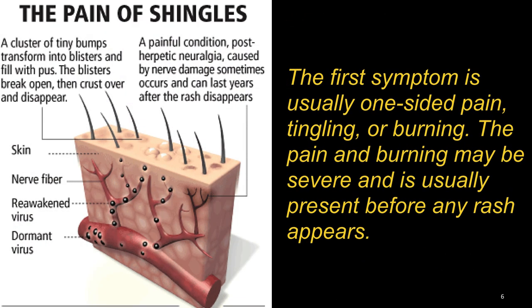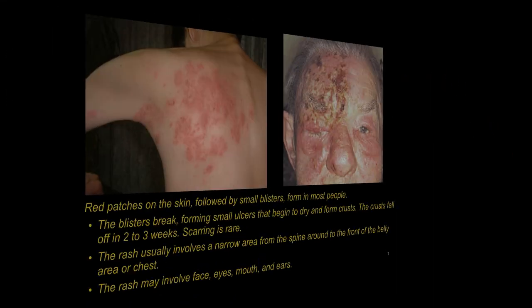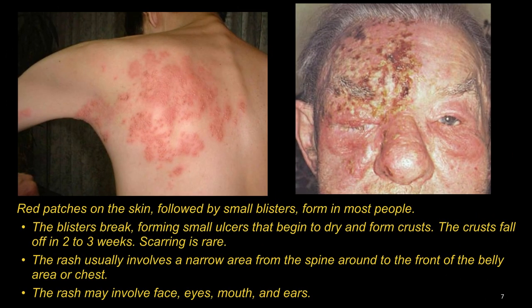The first symptom is usually one-sided pain, tingling or burning. The pain and burning may be severe and is usually present before any rash appears. Red patches on the skin followed by small blisters form in most people. The blisters break forming small ulcers that begin to dry and form crust.